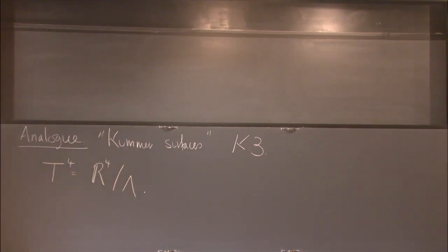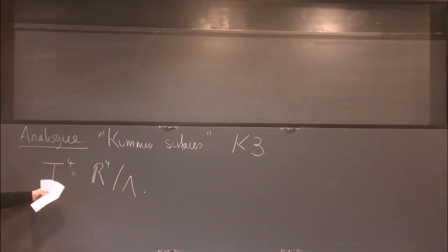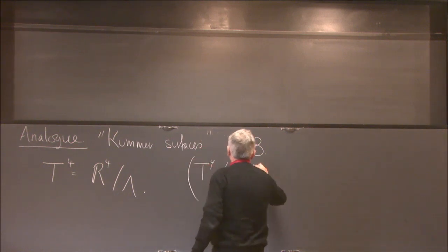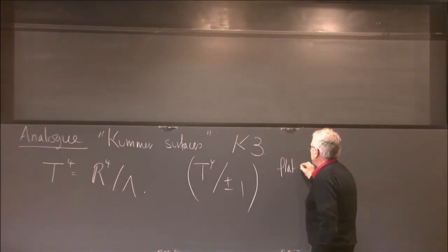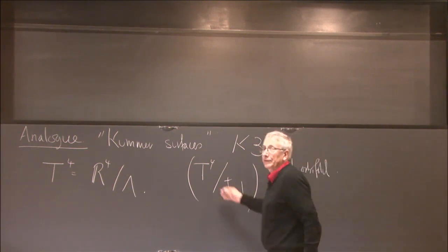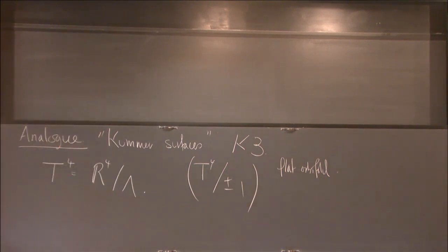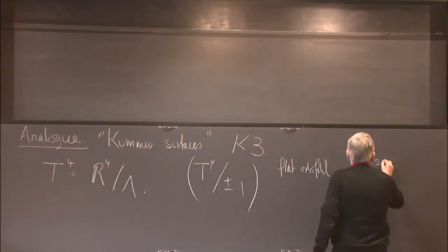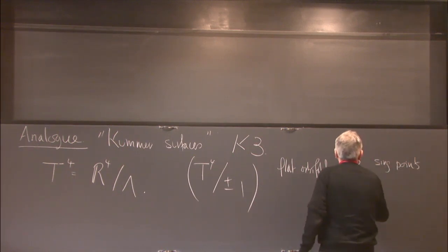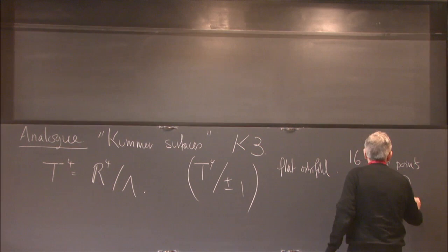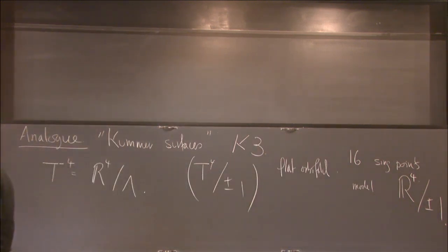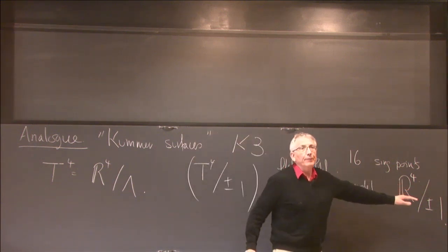We take a flat four-torus, think of it as R4 over a lattice. The map x goes to minus x on R4 induces a map on the four-torus, so we take the quotient space T4 over ±1, which is a flat orbifold. It has a flat metric but there are 16 singular points corresponding to the points of order two in the four-torus, modeled on a neighborhood of zero in R4/±1, which is a cone over RP3.